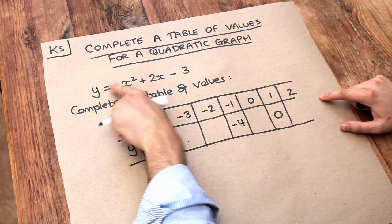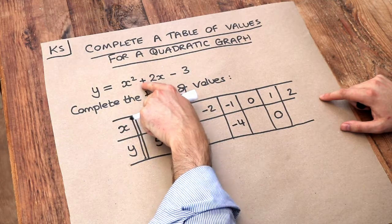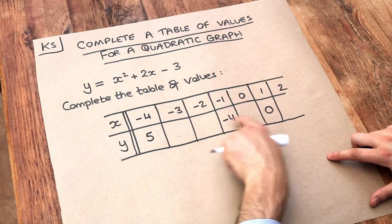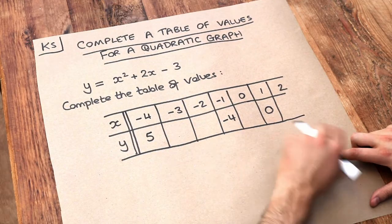So y will equal that x value squared plus 2 times that x value minus 3. Let's do that for each of these missing values. Some values have already been entered for us.